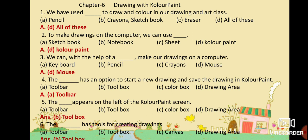MCQ No. 6: The dash has tools for creating drawings. Option A: Toolbar. Option B: Toolbox. Option C: Canvas. Option D: Drawing Area. Your answer is Option B: Toolbox. The toolbox has tools for creating drawings.